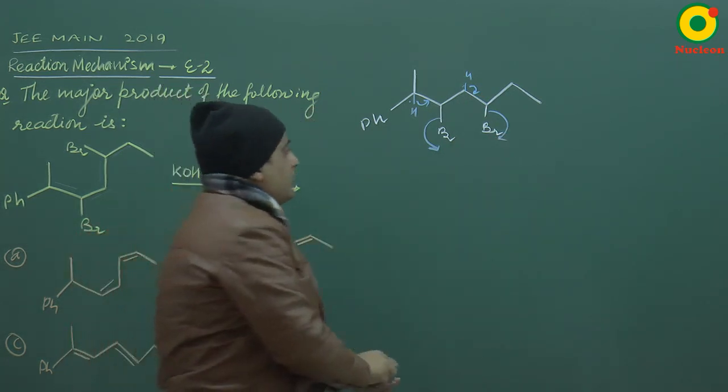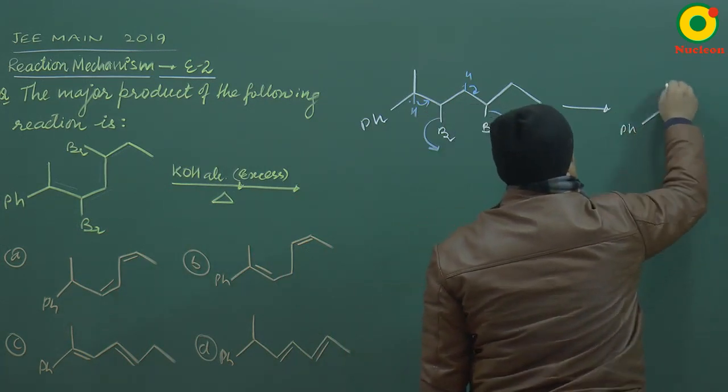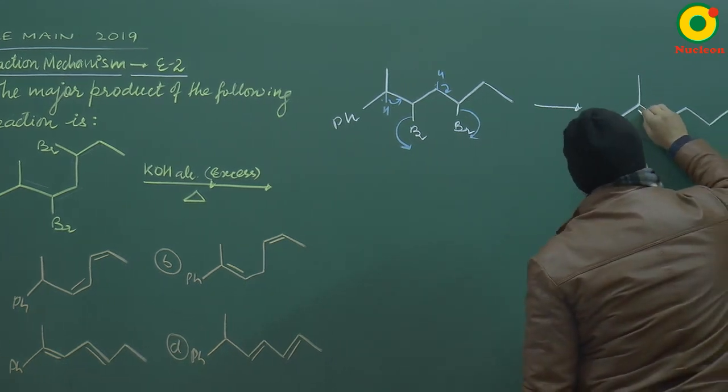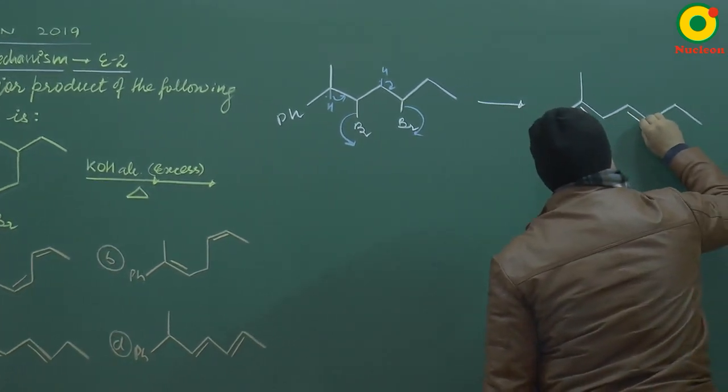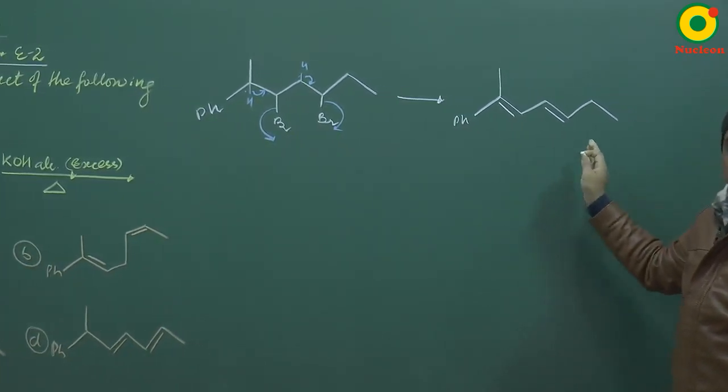So you can see, in both cases, there will be a double bond here and there will be a double bond here. So both bromo will become a double bond from the beta position.